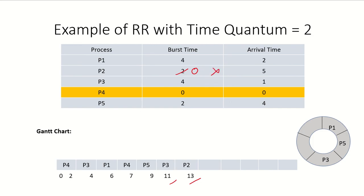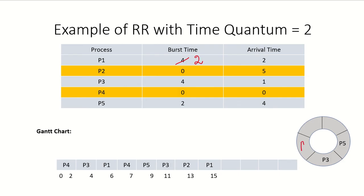We are now left with P1, P5, and P3. The processor is given to P1, which runs from thirteen to fifteen with a remaining time of two. P1 then joins the ready queue and P5 is given the processor. P5 runs from fifteen to seventeen, completing its burst time and exiting the system.